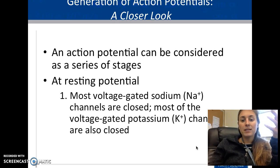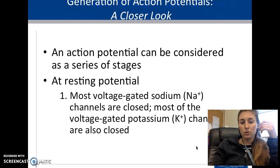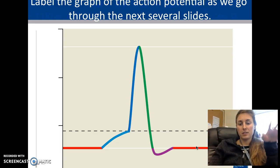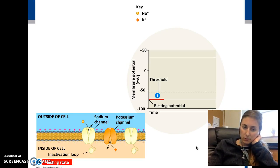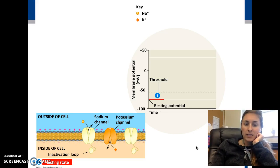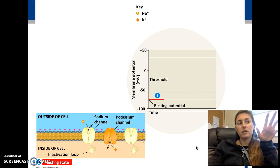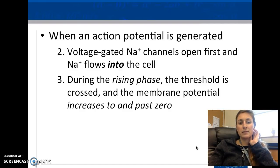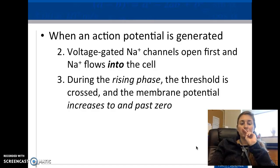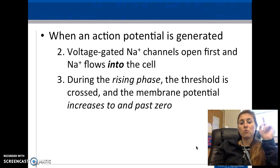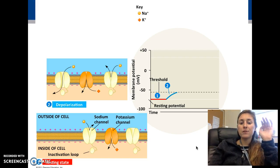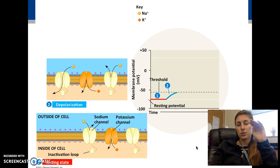At resting potential, almost all of the channels are closed, so the charges are not changing. The resting potential has positive outside and negative inside — lots of positively charged ions outside. In step two, voltage-gated sodium channels open first and sodium flows into the cell, starting to make it positive. This is the rising phase.